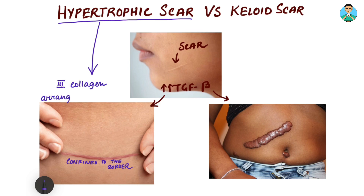This hypertrophic scar contains mainly type 3 collagen. The collagen arrangement is parallel, and hence it is confined within the borders of the original wound. This has infrequent recurrence — recurrence does not occur after treatment — and does not have any particular racial predisposition.